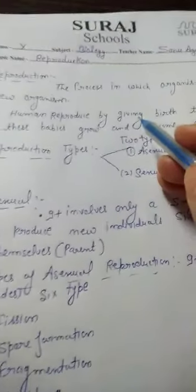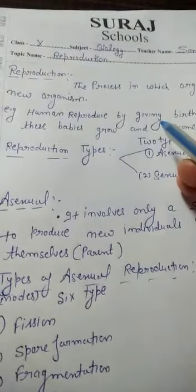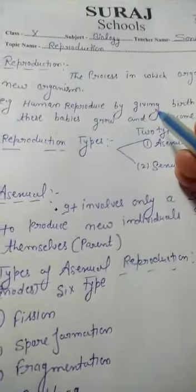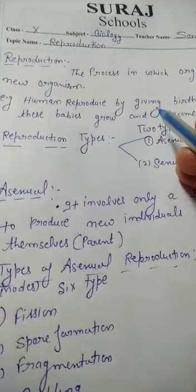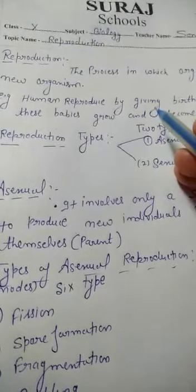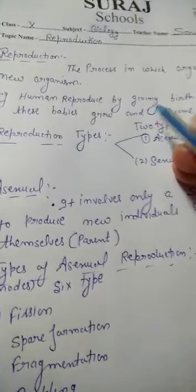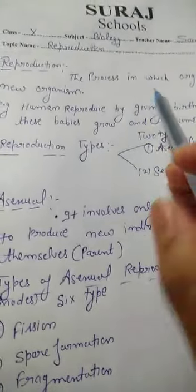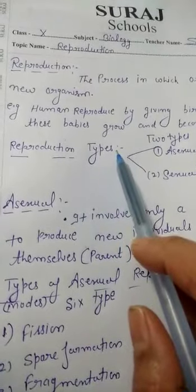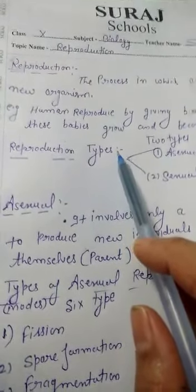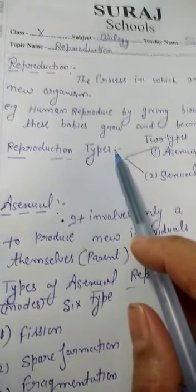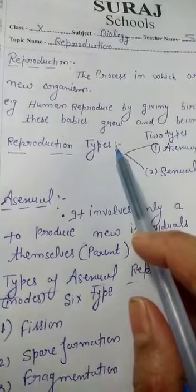Myself Sonu Agrawal from Sura School Triwadi. Students, today we will discuss chapter number third in our biology. The name of the chapter is: how do organisms reproduce?